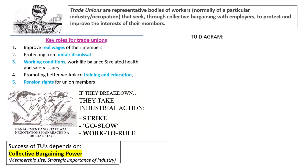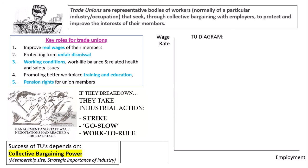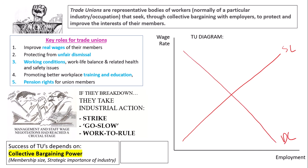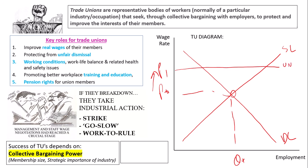Pause the video and draw a trade union diagram. Hopefully you've got your axes labelled correctly — wage rate and employment. We have a supply of labour curve and a demand of labour curve. Initially we have a wage rate that employees aren't necessarily happy with, so unions will negotiate for higher wages at P1, which creates this union wage.